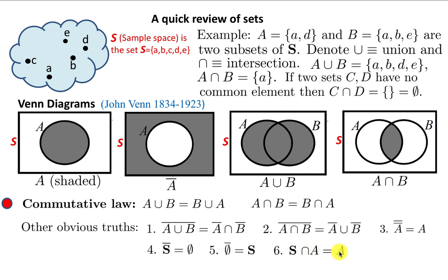I would suggest you take some paper and pencil and draw these and convince yourself they are true. Mathematicians might want to do the proof more formally, but at the end of the day you get the same result, and it's not much more useful to do it the rigorous way compared to using Venn diagrams. This was all pretty trivial because we were dealing with only two sets. What if there are three sets? There we will encounter something new and different.